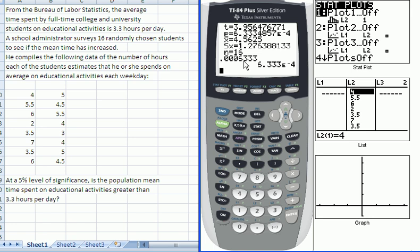So you can see, compare that value to α in order to make your decision about the hypothesis test. And since the p-value is less than α, which is 0.05, we are going to reject the null hypothesis, and we can conclude that there is sufficient evidence to conclude that the population mean time spent on educational activities is greater than 3.3 hours per day.